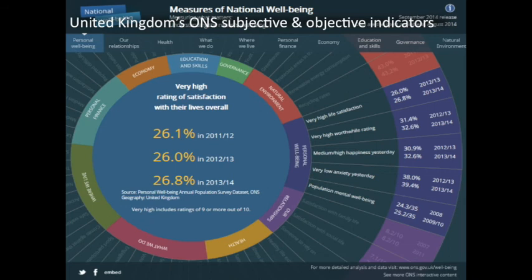Let's jump over to the United Kingdom and see how their Office of National Statistics started measuring happiness and well-being. This is their wheel of well-being — their measures of national well-being — and you can see that there is an understanding that all of these different domains or conditions are aspects of our well-being, using subjective and objective measures together. In the economy you'll see income for individuals as an objective measure, and in well-being you'll see life satisfaction, an aspect of eudaimonia such as worthwhileness, and two affect measures: positive happiness and negative anxiety.